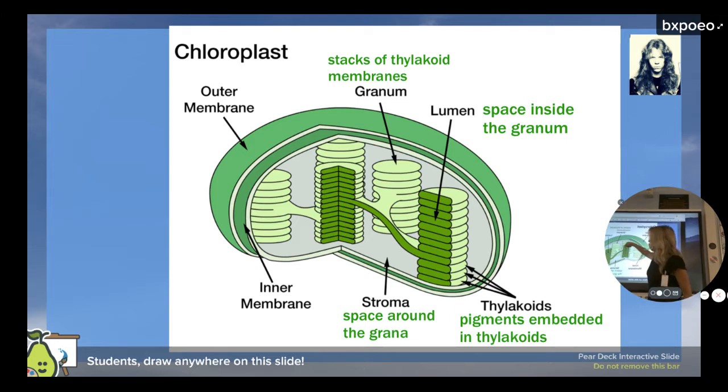So those electron transport chains occur here on these thylakoid membranes. The interior, the lumen, the center is where we concentrate the hydrogen ions. Remember PQ is what brings in those hydrogen ions. We concentrate them here in the interior. This is a granum. And when we concentrate the hydrogen ions inside, then they want to go back out into the stroma. Out into the stroma. And it's out in the stroma that we make ATP and our reduced NADP.